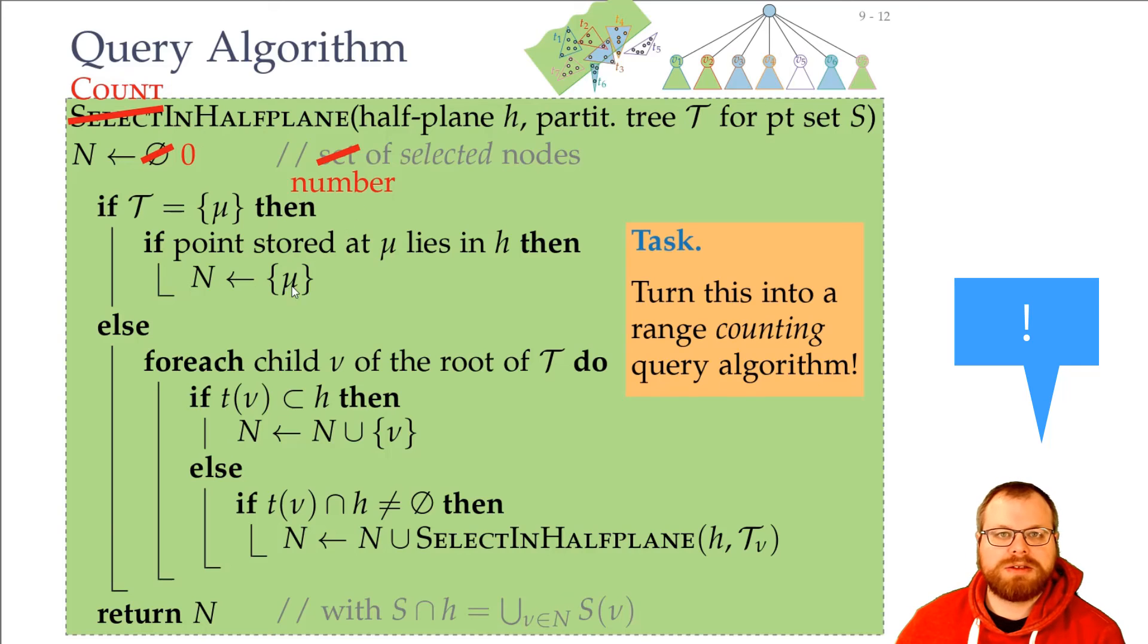So here, instead of adding the node, we just add a one. Here, instead of adding the node, we add the number of points that lie inside the canonical subset of this node.